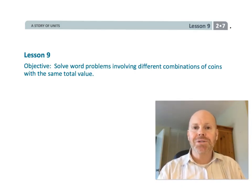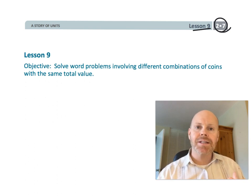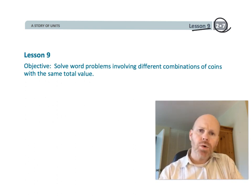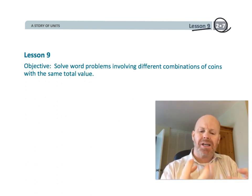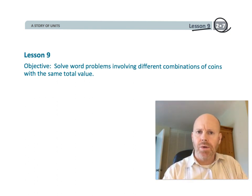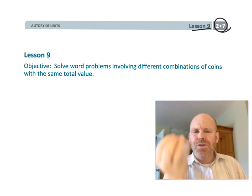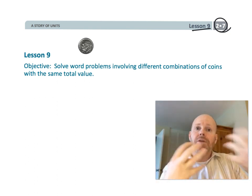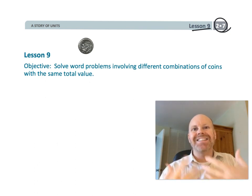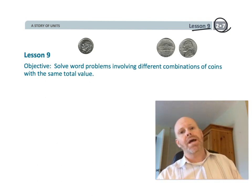This is second grade module 7 lesson 9. In this lesson, students are going to be solving word problems, but they're also going to be talking about combinations of coins. That means if you've got a dime, what's another way you could create 10 cents? You can have two nickels, or you can have a nickel and five pennies, or you can have 10 pennies.